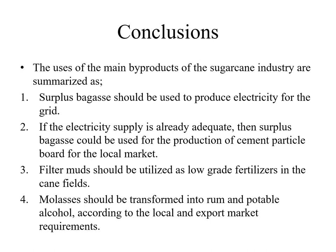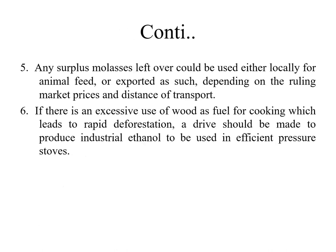Molasses should be transformed into rum and potable alcohol according to local and export market requirements. Any surplus molasses left over could be used either locally for animal feed or exported, depending on the ruling market prices and distance of transport. If there is excessive use of wood as fuel for cooking — which leads to rapid deforestation — a drive should be made to produce industrial ethanol to be used in efficient pressure stoves.